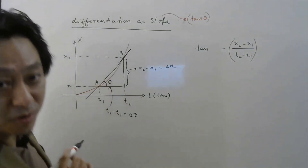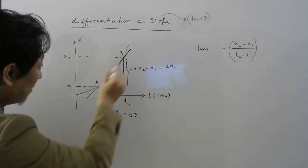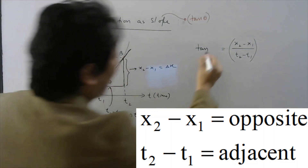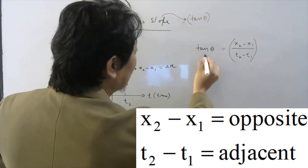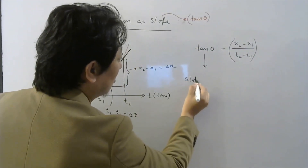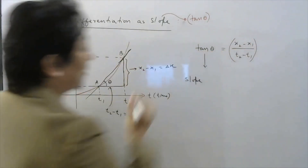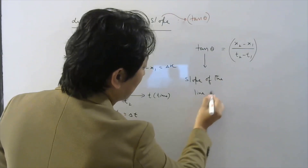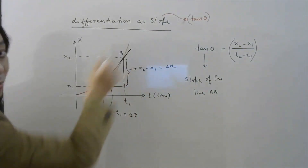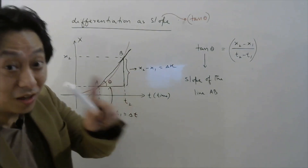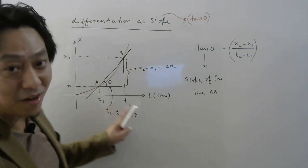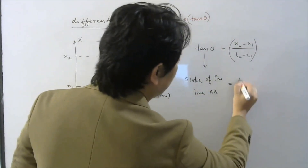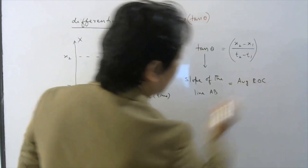Think carefully — from your school days, the tan of this angle for a right-angle triangle is opposite by adjacent. So tan theta is nothing but slope. This ratio is nothing but tan theta, and tan theta is the slope of the line passing through the two points corresponding to t1 and t2. So slope of line AB represents nothing but average rate of change.